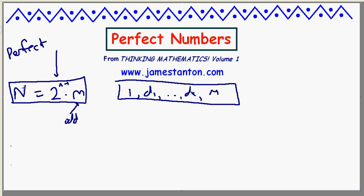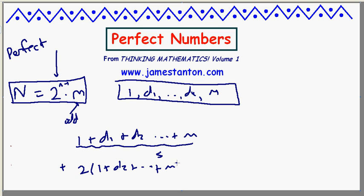We're going to assume this is perfect. That is, its factors, except for the whole number itself, add up to itself. What are the factors of 2 to the n minus 1 times m? Well, I've certainly got all the factors that m has. So I've got 1 plus d1 plus d2 and so on plus m. Let me call that s. Plus, I've got 2 times those - I'm going to take one of these 2's and do all those factors. So double this: 1 plus d2 and so on up to m. That's 2s. Plus, if I take 2 of these 2's, that's 4s, all the way up to the whole power of 2 itself, 2 to the n minus 1 times one of each of these factors of m.